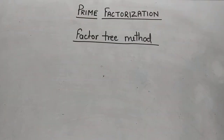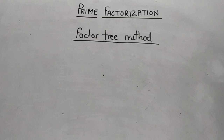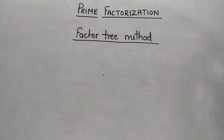Now let us look at the second method: the factor tree method. In this method, we break up the number into its factors, continuing the process until we get all factors as prime numbers. Let us see one example — let us take 90 again.